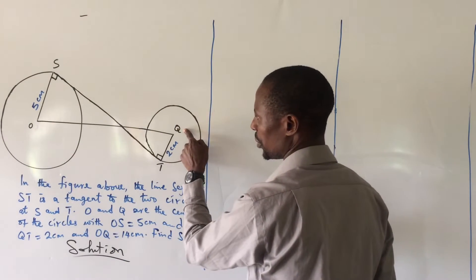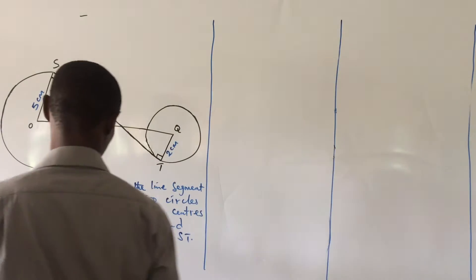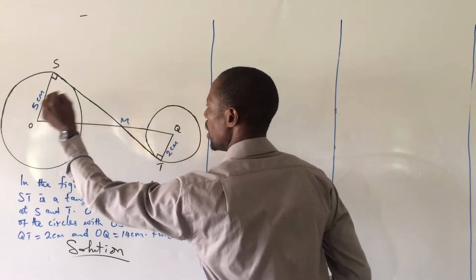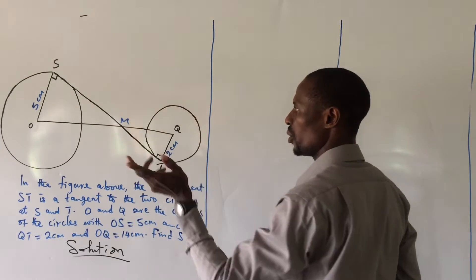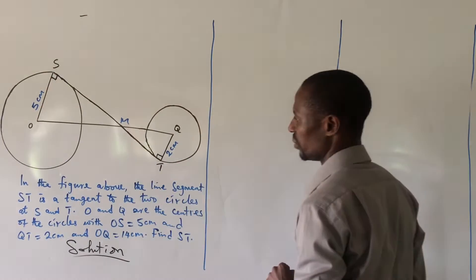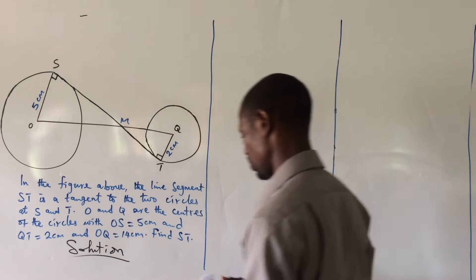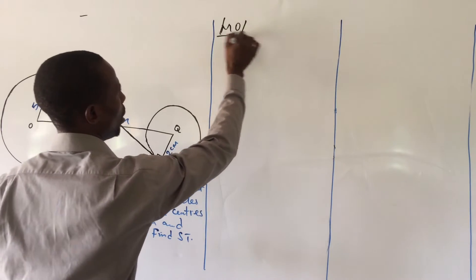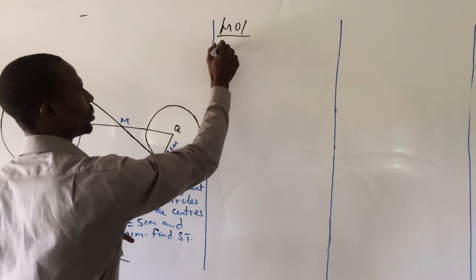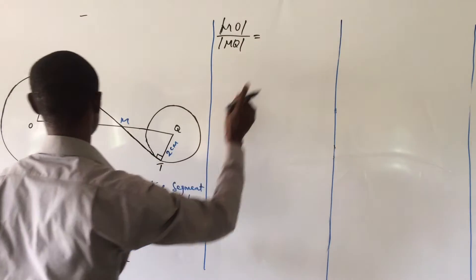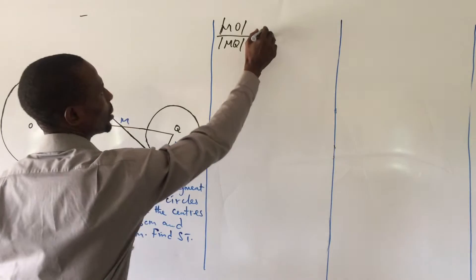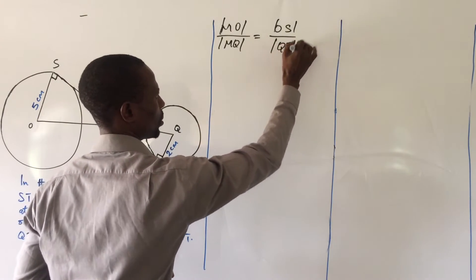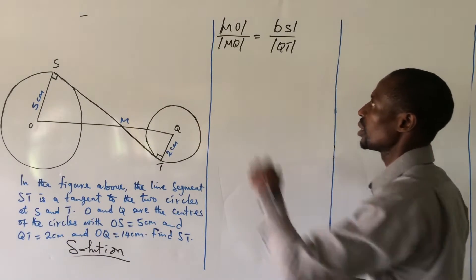We can split OQ into two by labeling the midpoint M. The theorem states that MO over MQ equals OX over QT. Let's put down that theory: line MO over line MQ equals line OX over line QT.